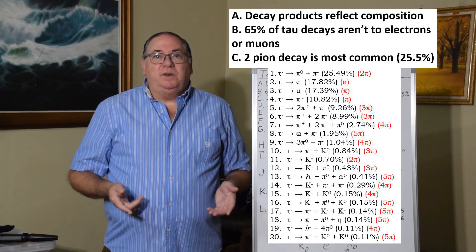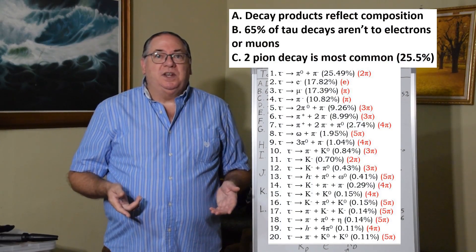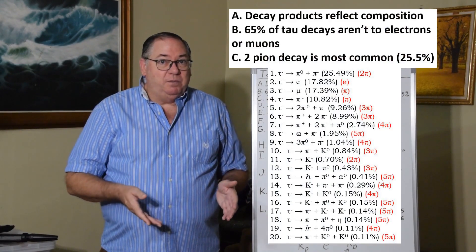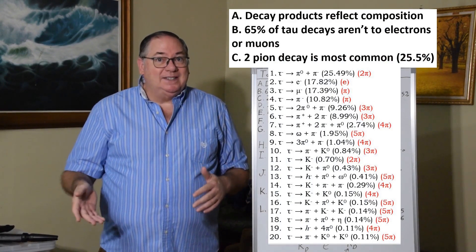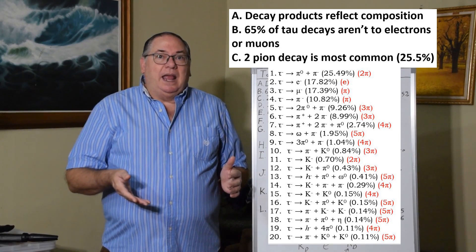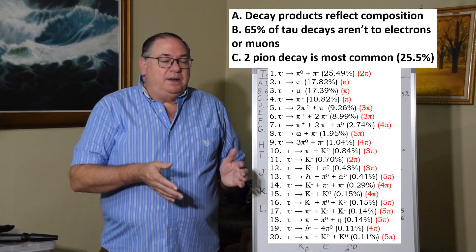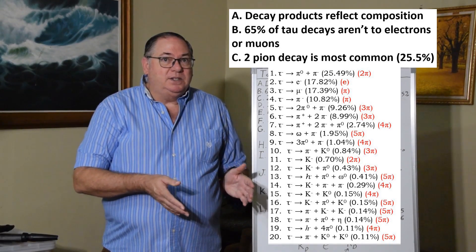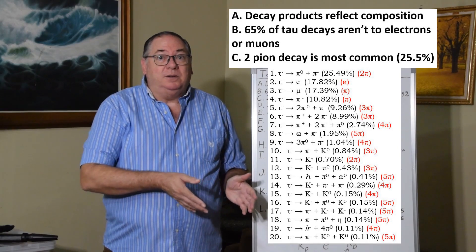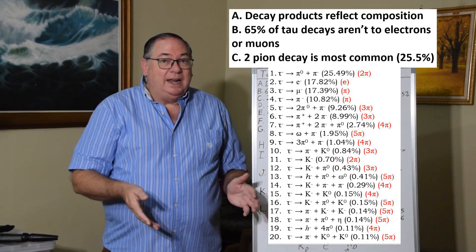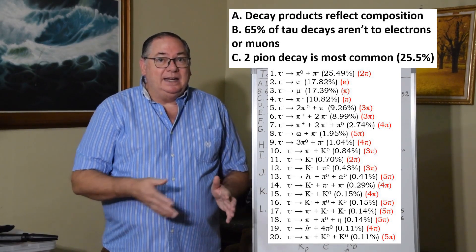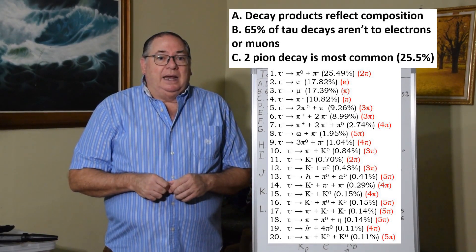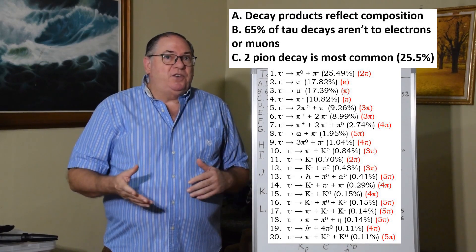One of the first things you need to do is consider that the decay products, when a particle decays, have to come from somewhere. Causality exists. And what I found is most of the decay products come from the particle. They were in there, and then when it decays, it decays to what it was made of.